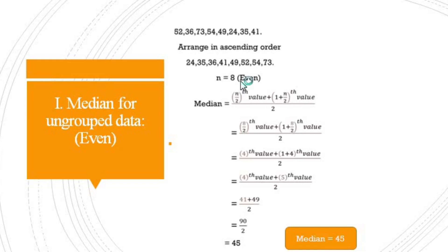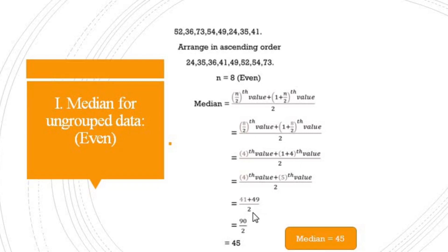Applying the formula: Median = ((n/2)th value + (n/2 + 1)th value) / 2. Here n = 8, so (8/2)th = 4th value, and (8/2 + 1)th = 5th value. The 4th value in ascending order is 41, and the 5th value is 49. So median = (41 + 49) / 2 = 90 / 2 = 45. The median is equal to 45.